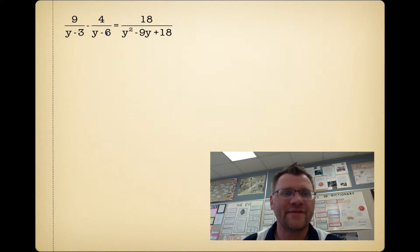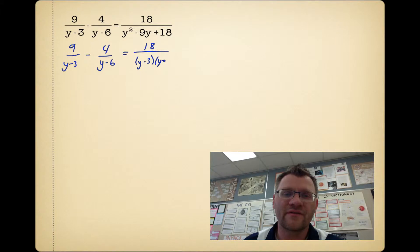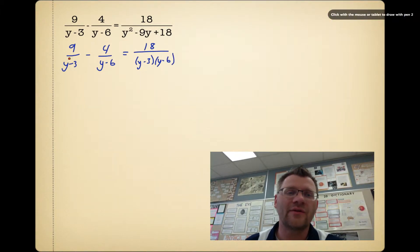We have 9/(y-3) - 4/(y-6) = 18/(y² - 9y + 18). Your first step at all times is going to be that you want to factor anything that isn't already factored, top and bottom. We have y² - 9y + 18, so we're looking for two things that multiply to 18 but add to negative 9. That's (y-3) and (y-6). Now when we take a look at each of our fractions, we can notice there's a y-3 and a y-6 in all of them.